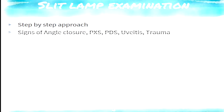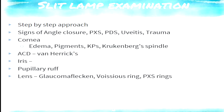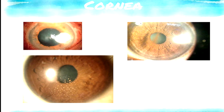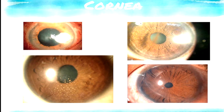For slit lamp examination, go from anterior to posterior — see one structure at a time: conjunctiva, cornea, then anterior chamber. Regarding the cornea, examine from the anterior to posterior layers. You might see corneal edema, Krukenberg spindles indicating pigmentary glaucoma, keratic precipitates associated with iridocyclitis, or a congenital buphthalmos eye with a tram-track appearance.